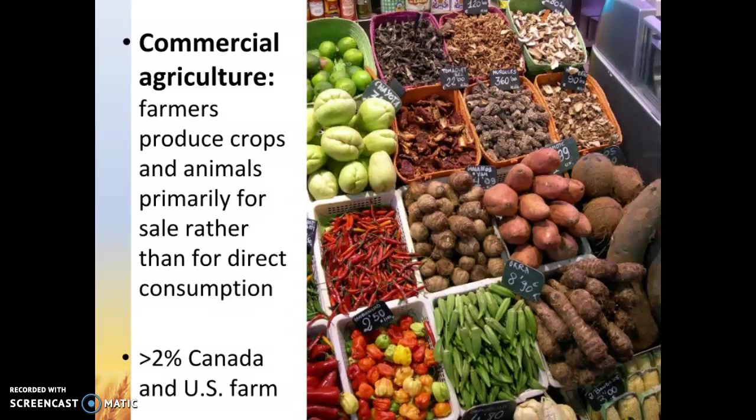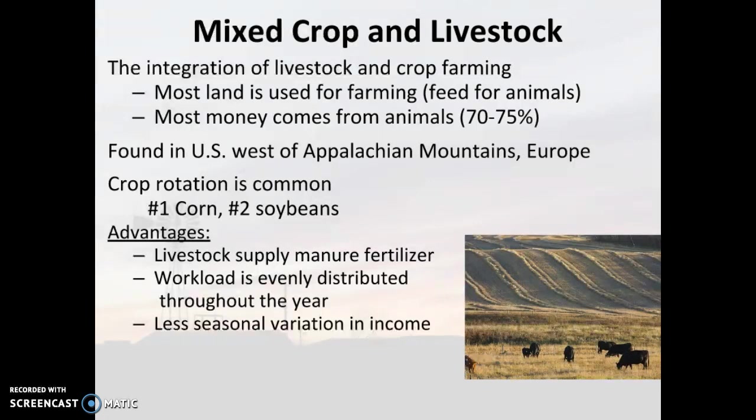We just finished discussing LDC agriculture. Now we're going to look at MDC agriculture, which is primarily commercial agriculture. This is when farmers produce crops and animals primarily for sale rather than for their own direct consumption. This is also a very small percentage of the workforce, roughly 2% in Canada and the United States, and MDC overall is about 3%. One example is mixed crop and livestock.